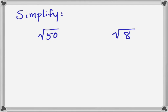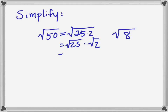To simplify a square root, the only thing I need to do is check if there is a perfect square inside, and I do this by factoring. If you can see right away that 50 is 25 times 2, and 25 is a perfect square, we can rewrite this as square root of 25 times 2. There's a rule that the square root of a product is the same as the product of two square roots. So I can split it up: square root of 25 times square root of 2. The square root of 25 is 5, and the square root of 2 is fully simplified. So the answer is 5 square root of 2.